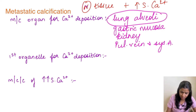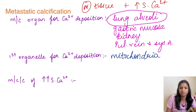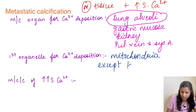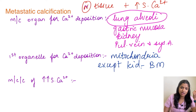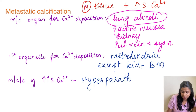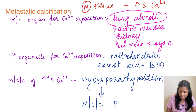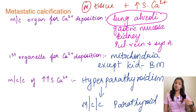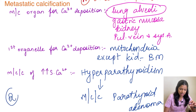The first organelle in which calcium gets deposited is the mitochondria — except in the kidney, where it is the basement membrane. These are important MCQs. The most common cause of elevated serum calcium in metastatic calcification is hyperparathyroidism, and the most common cause of hyperparathyroidism is a parathyroid adenoma. PTH causes increased serum calcium levels.